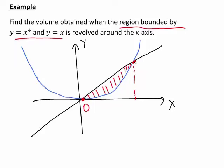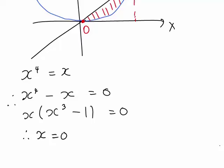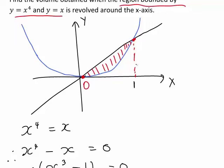The easiest way to find that is to look at the point of intersection of the two graphs by solving x to the 4 equals x. This gives x to the 4 minus x equals 0. Taking x out as a common factor gives x times x cubed minus 1 equals 0. We can see that has the solution x equals 0, corresponding to our first point. The cubic has just one real solution, which turns out to be x equals 1. So the x-value at the second boundary point, projected down from the intersection of the graphs, is x equals 1.